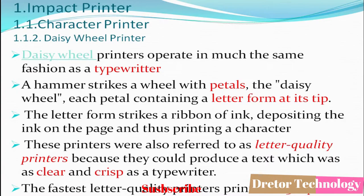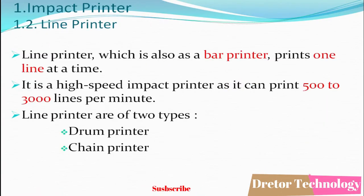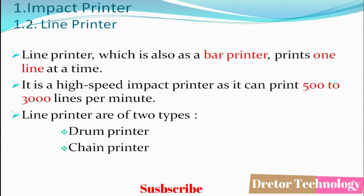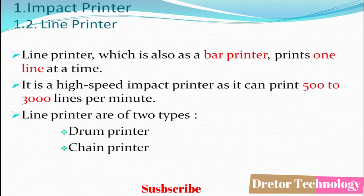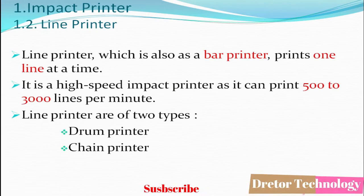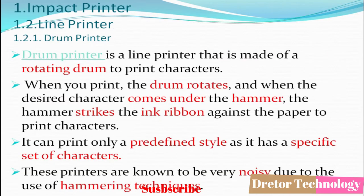The second type of impact printer is the line printer, also known as a bar printer, which prints one line at a time rather than one character at a time. It is a high-speed impact printer that can print 500 to 3,000 lines per minute. Line printers are of two types: drum printer and chain printer.